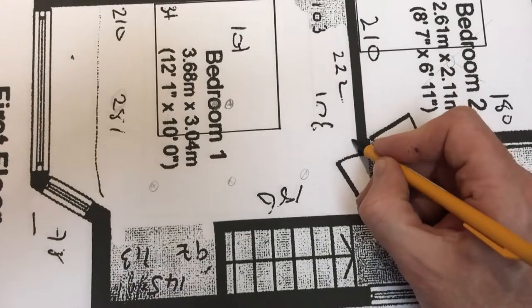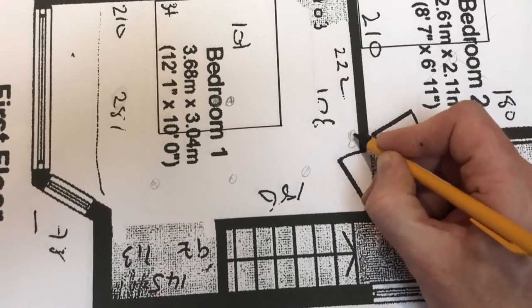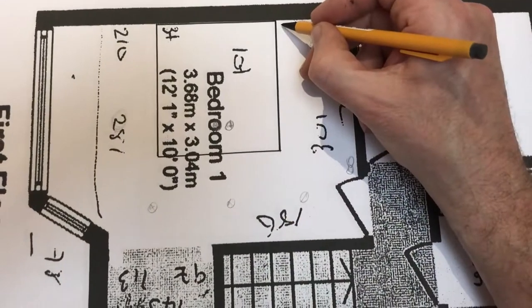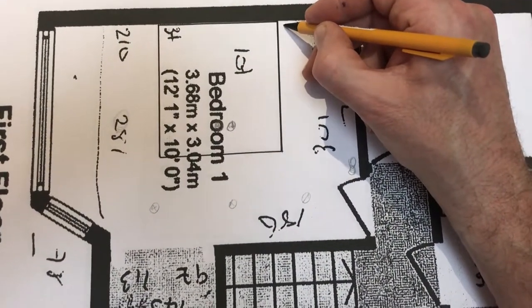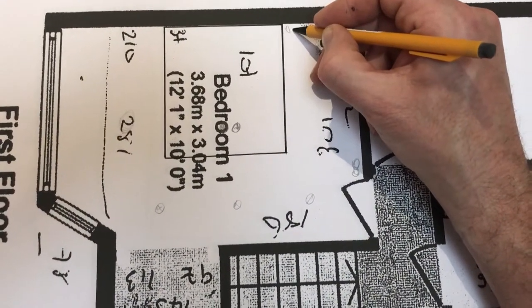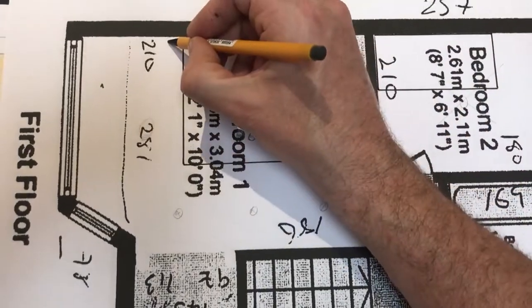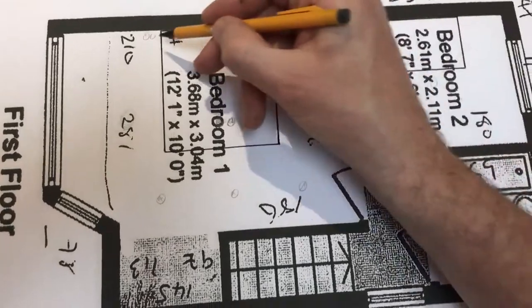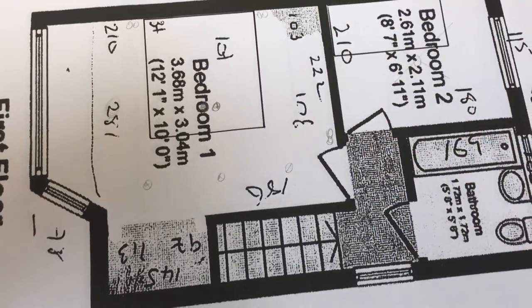So obviously we need light switches. We need a light switch by the door, so one for the pendant, one for the spotlights. And then over here it'll be the same, you need one for the spotlights, one for the pendant. So we will have an intermediate switching system going on in this room.